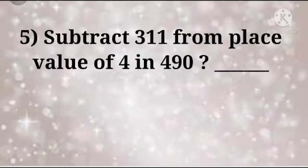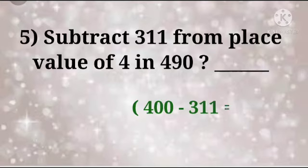Next number 5. Subtract 311 from place value of 4 in 490. So children, first we will find out the place value of 4. We will get 400. So 400 minus 311, we will get 89. So answer will be 89.